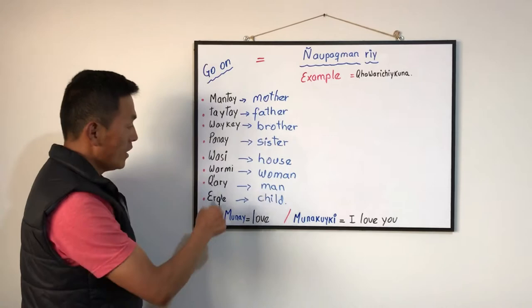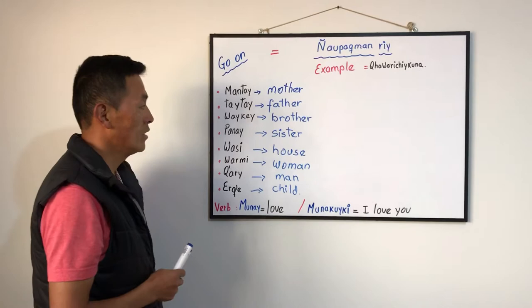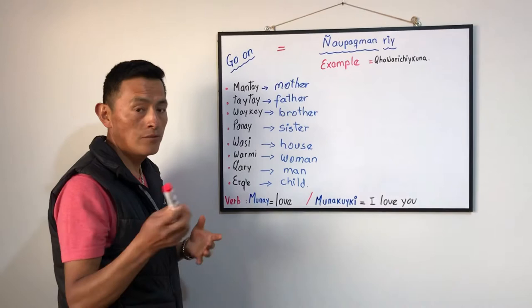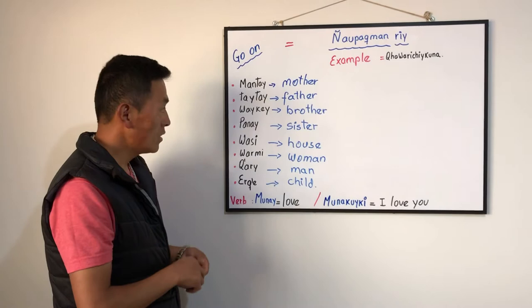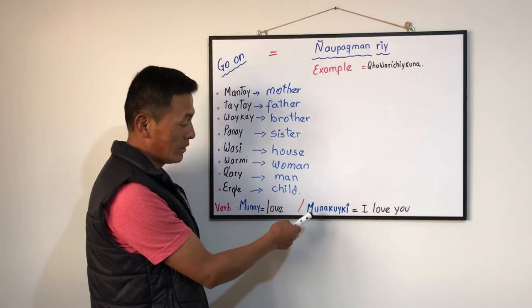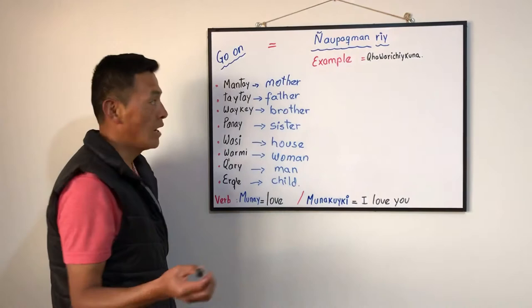Those eight words in Quechua mean the same words you already know in your native languages. For me, native language is Quechua, and for you guys it's English. Now we will make a conjugation with this irregular verb, Munacuiki. If you want to say 'I love you, mom' in Quechua, we have to say Mantai.